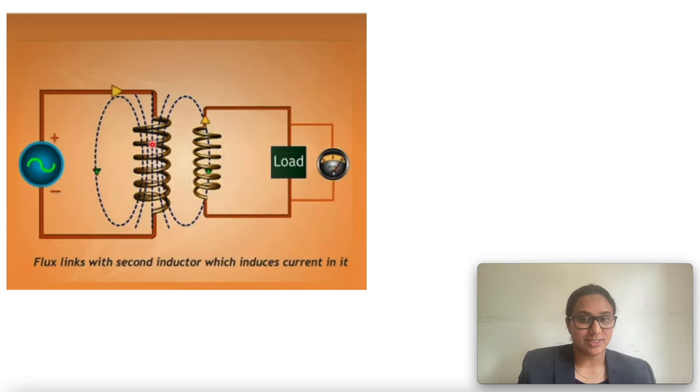Hence, the change in magnetic field lines associated with the secondary coil is the cause of induced electric current in it. This process by which a changing magnetic field in a conductor induces a current in another conductor is called electromagnetic induction.